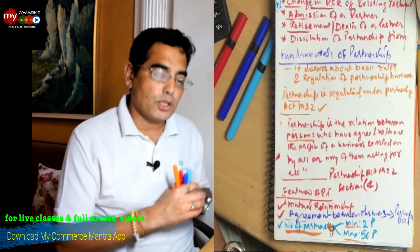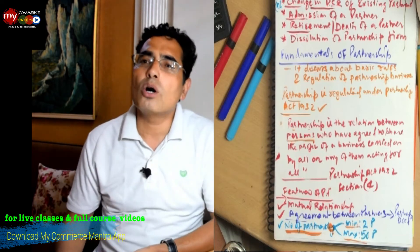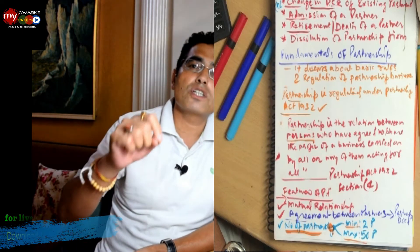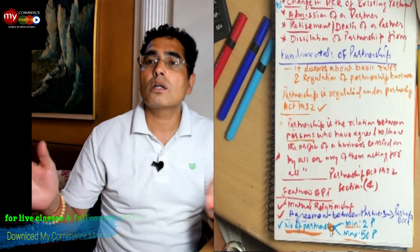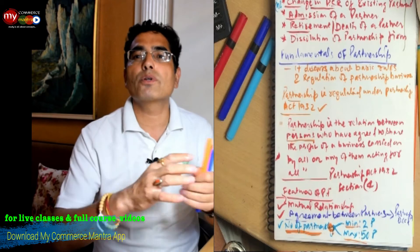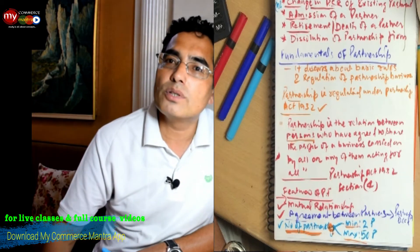It says 'who have agreed to share the profit of a business.' These people's basic and biggest motive is to share profit. They all come together to share or divide the profit of a business.